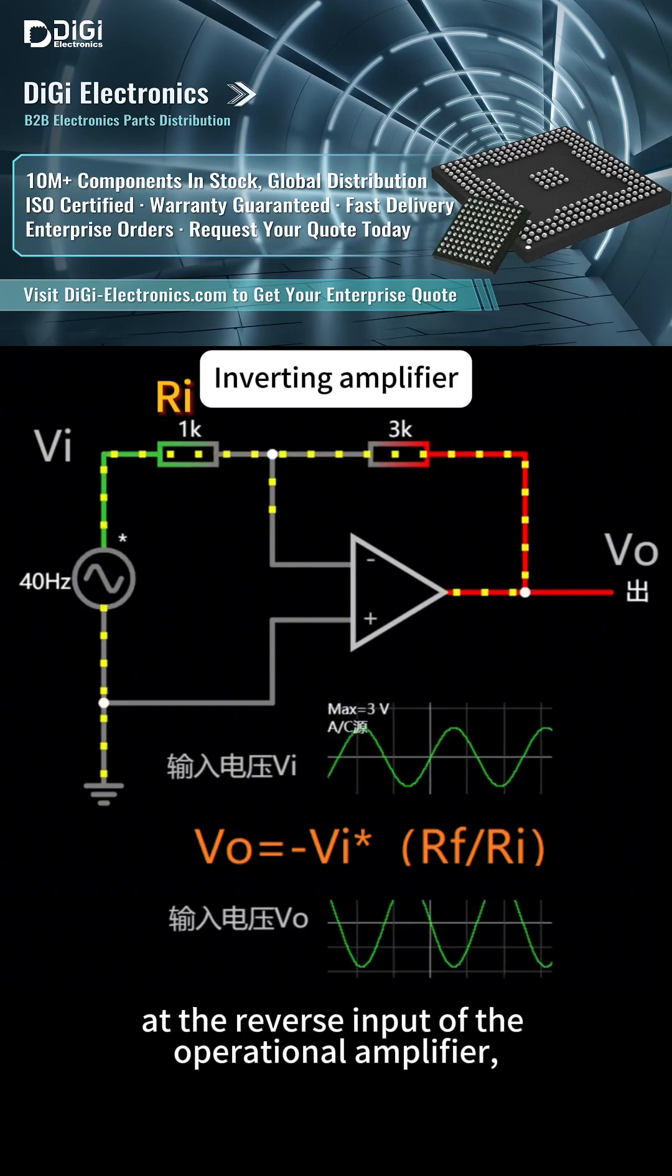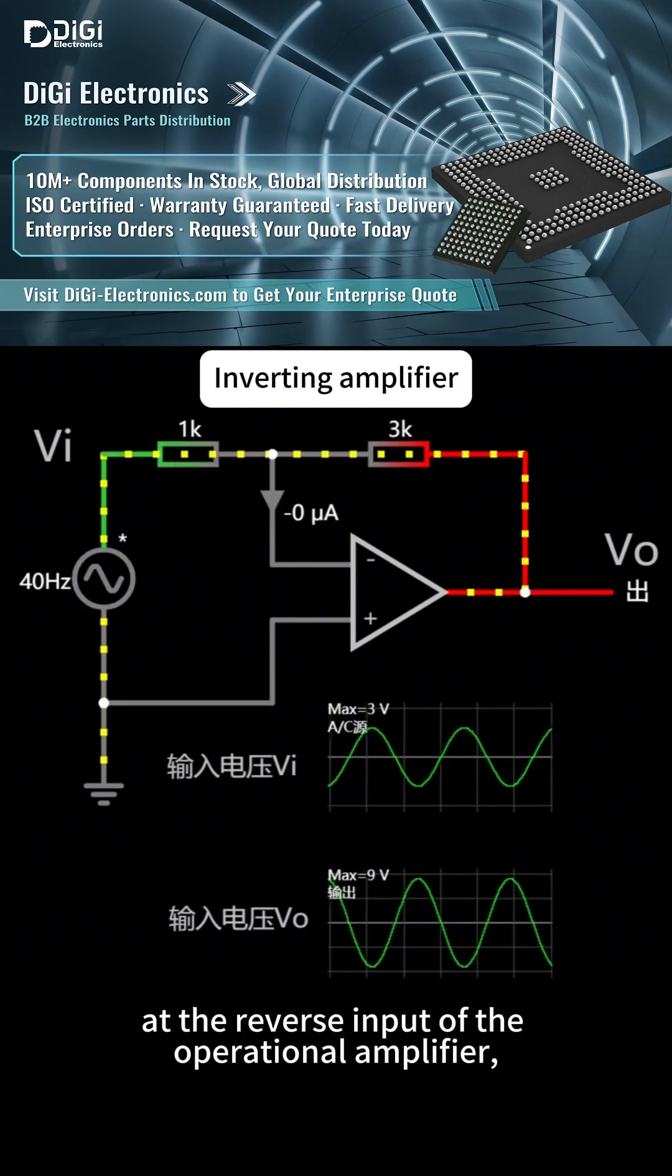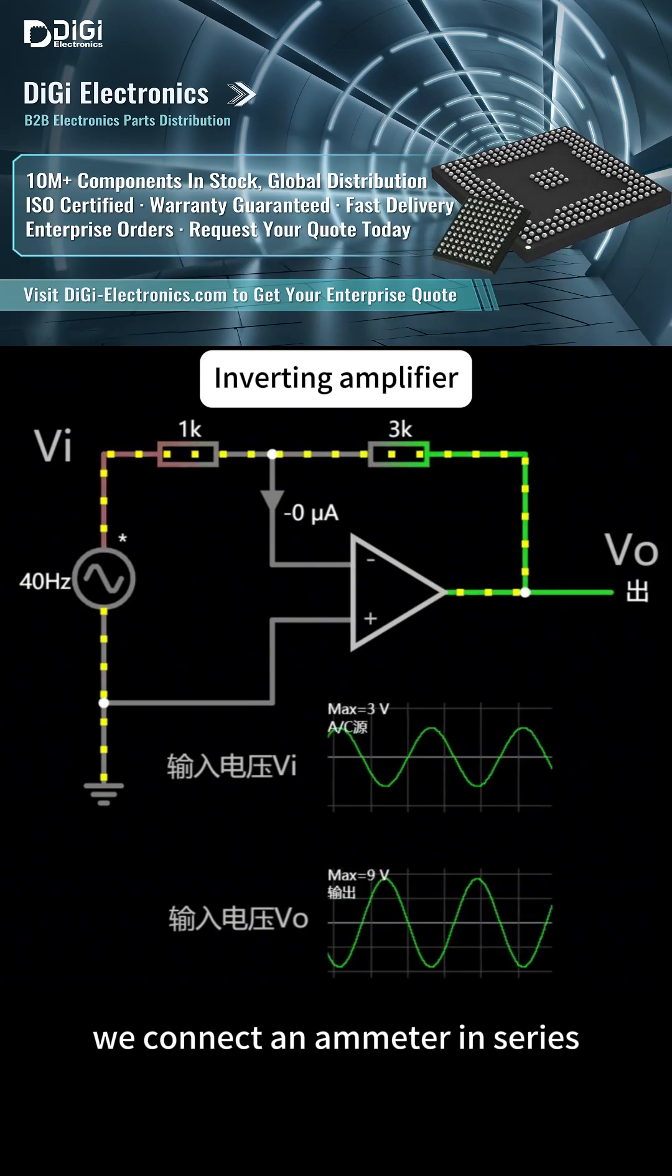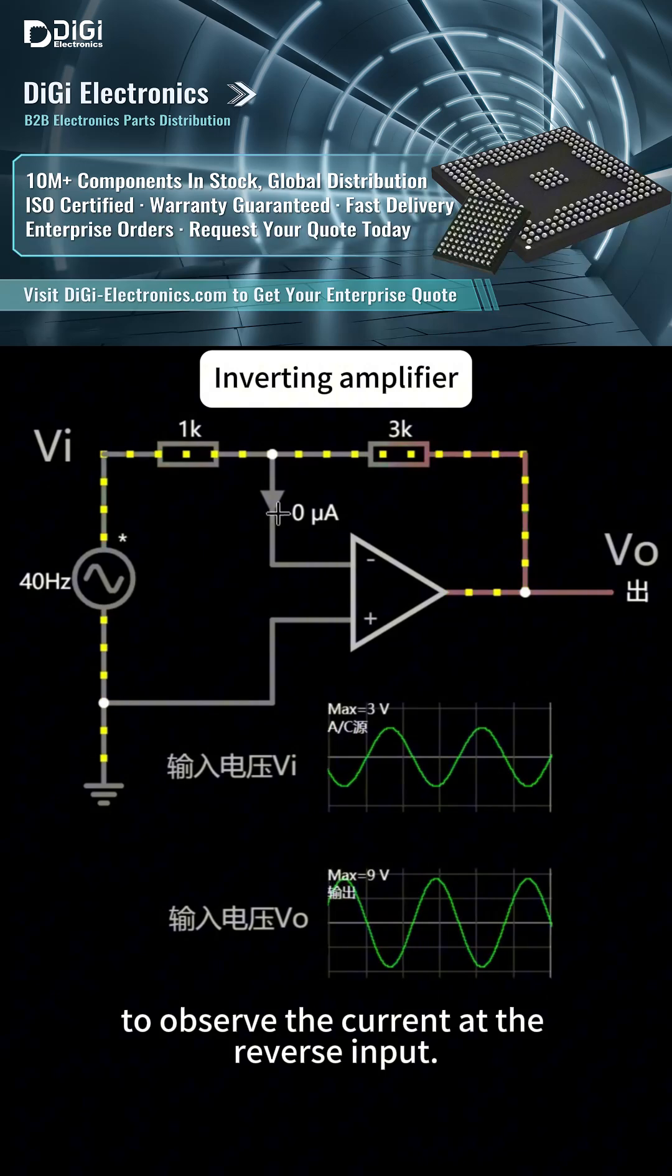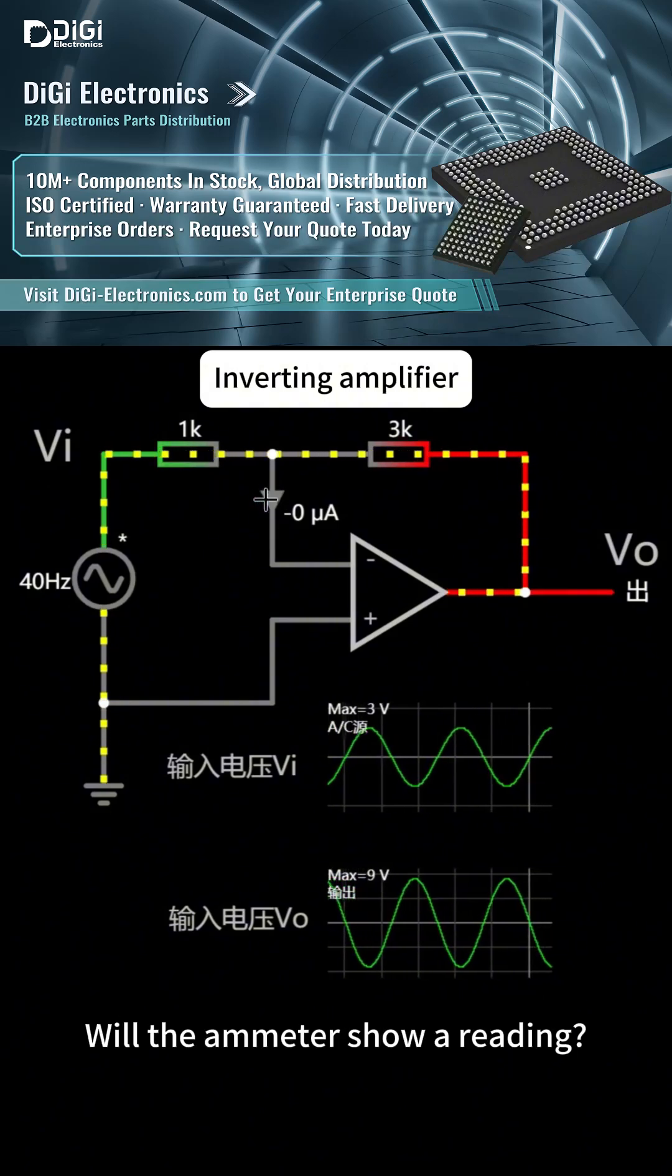If we connect an ammeter in series at the reverse input of the operational amplifier to observe the current at the reverse input, will the ammeter show a reading?